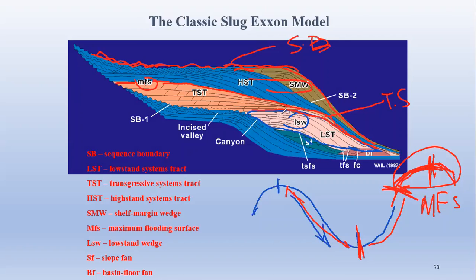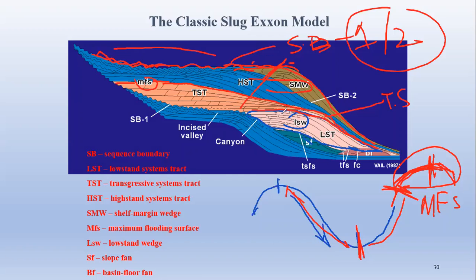The type of sequence boundary depends upon the magnitude of sea level fall. If the fall occurs below the shelf edge breakpoint, then a type 1 sequence boundary will form. If the fall occurs above the shelf edge breakpoint, then a type 2 sequence boundary will form. If there is a type 1 sequence boundary, then after it, a low stand system track will develop again, and this cycle of deposition continues.